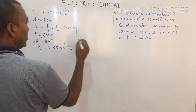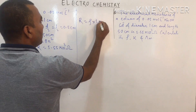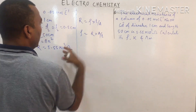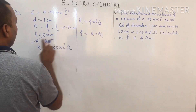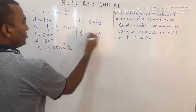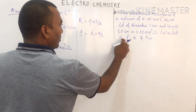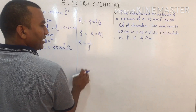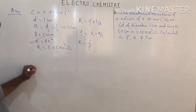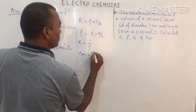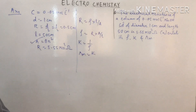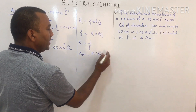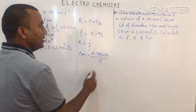Since R = ρ × l / A, we get ρ = R × A / l. With l, A, and R known, we calculate ρ. Then κ = 1/ρ. For molar conductivity, check whether units are in CGS; if so, use λm = (κ × 1000) / C.